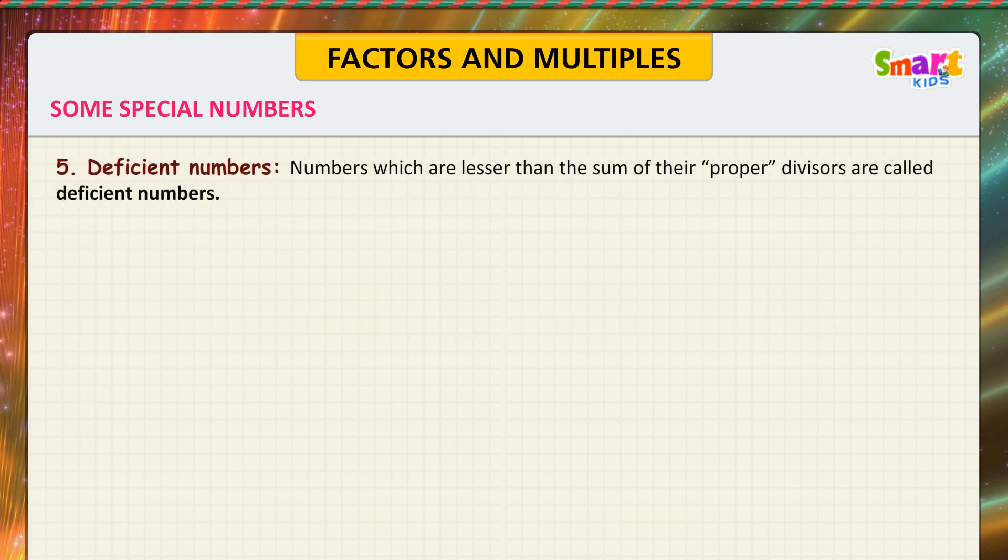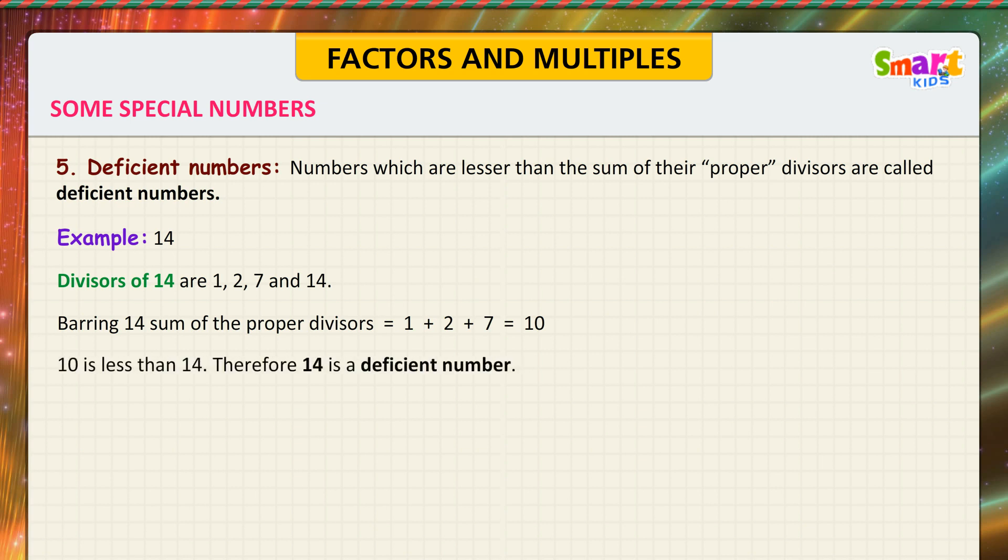Deficient Numbers: Numbers which are lesser than the sum of their proper divisors are called deficient numbers. See the example. 14. Divisors of 14 are 1, 2, 7, and 14. Barring 14, sum of the proper divisors is equal to 1 plus 2 plus 7 is equal to 10. 10 is less than 14. Therefore, 14 is a deficient number.